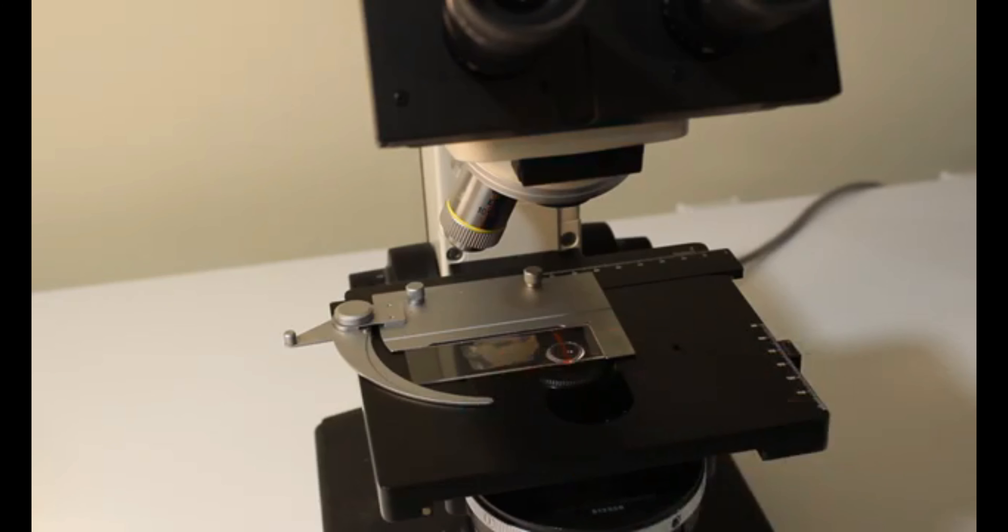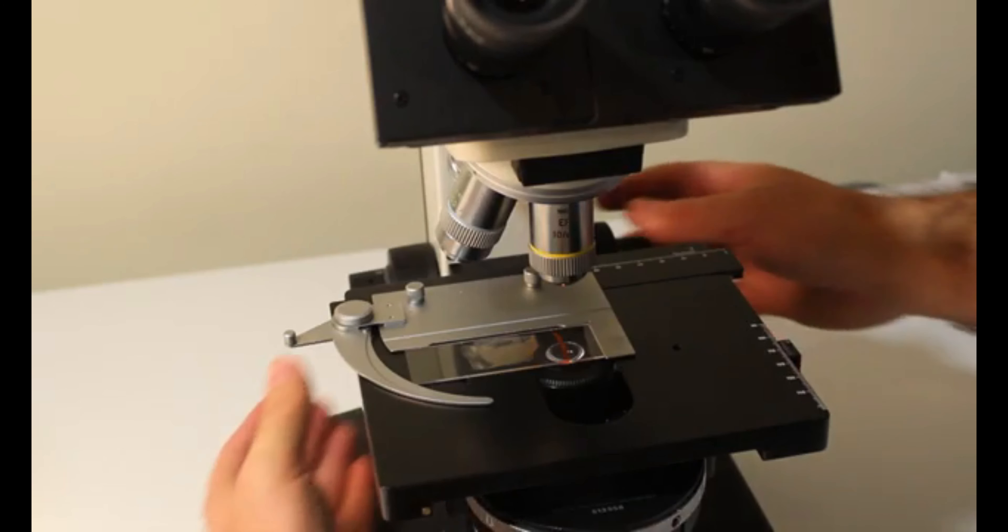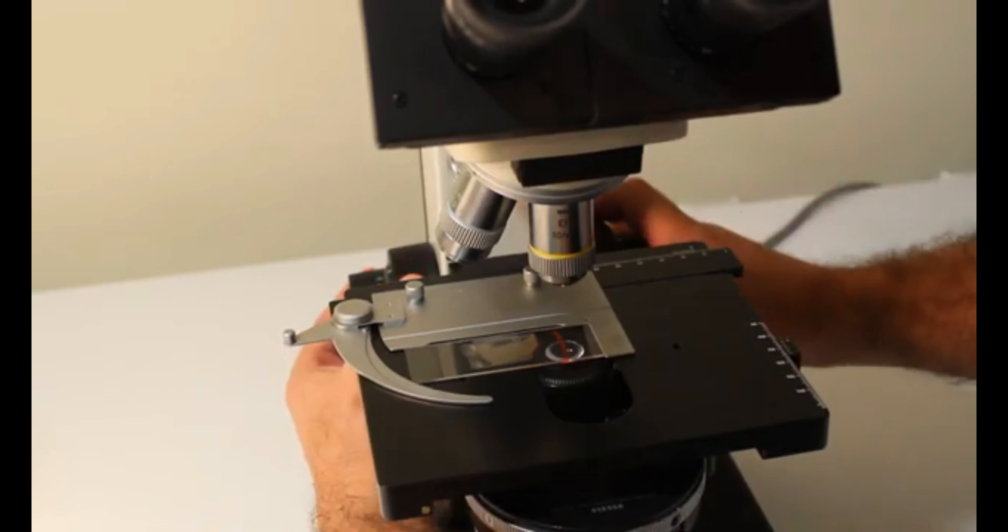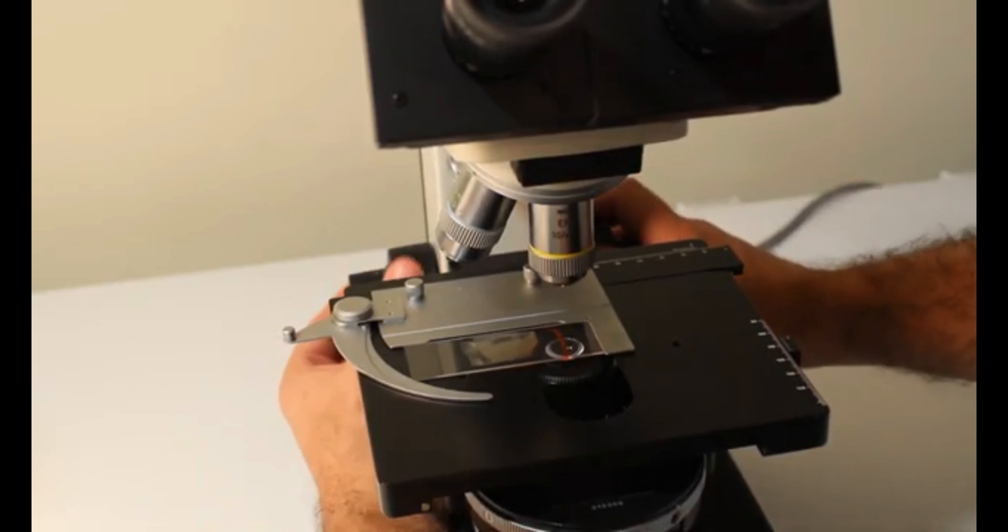What I want to do next is turn on my light source and swing into position my lowest magnification lens. You always want to be starting with your lowest magnification lens because this is the easiest lens to find your focus on. Now, while looking through the eyepieces and turning the focus knobs, I want to bring my sample up until focus. Basically looking through the eyepieces to see when that sample is actually in focus.